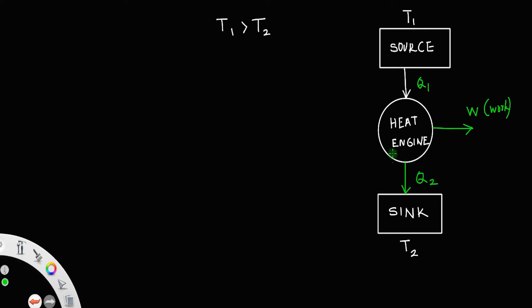So, this is the basic working of a heat engine. It always absorbs Q1 amount of heat from the source and does some work, and rest of the heat it rejects to the sink.